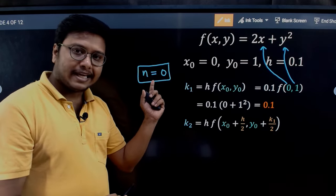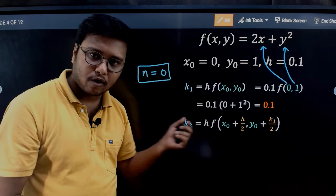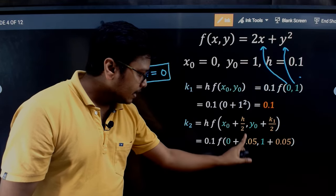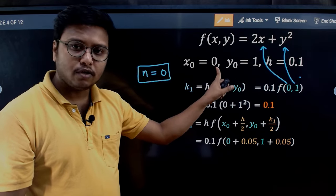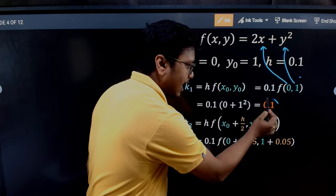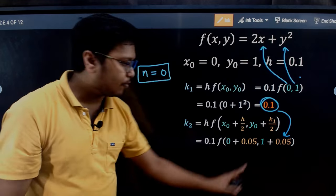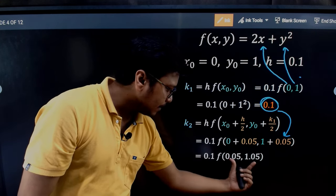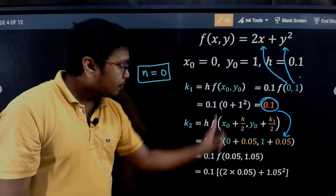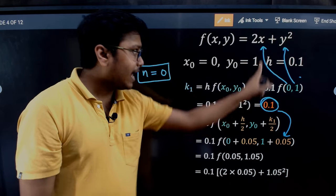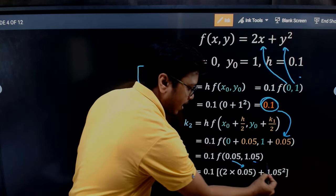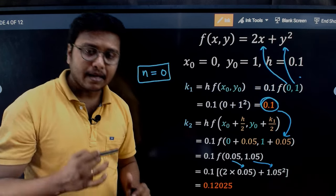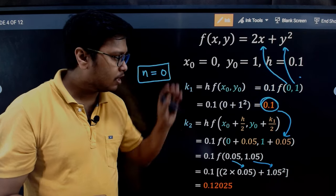Next, we apply the formula for k2. Here, h/2 = 0.05, x0 = 0, y0 = 1, and k1/2 = 0.05. So we evaluate f(0.05, 1.05): that's 0.1 × (2(0.05) + (1.05)²). Adding those values gives us the value of k2.